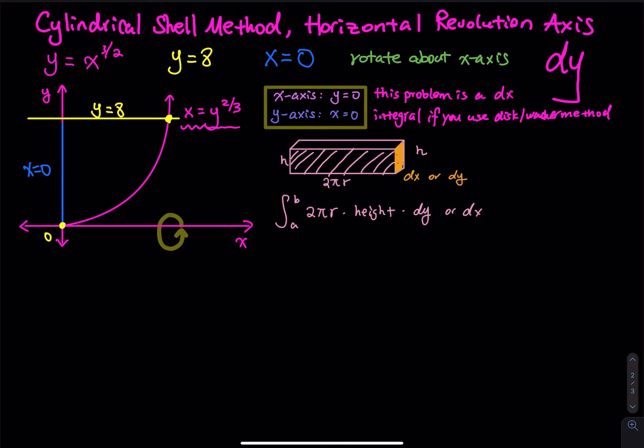So you take the given function, y equals x raised to 3/2, and then you raise both sides by 2/3 power, and then you have x equals y raised to 2/3 power, and then you get a curve.